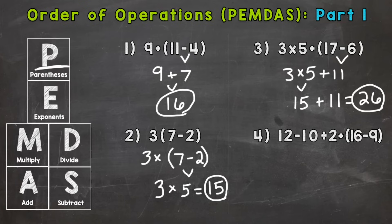So number four we have twelve minus ten divided by two plus sixteen minus nine in parentheses. So parentheses we need to do first. Sixteen minus nine is seven. Now we need to bring down everything that was not used. So now we have subtraction, division, and addition.